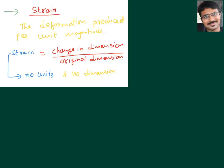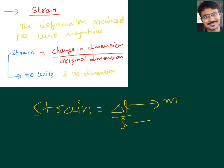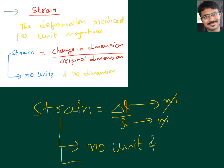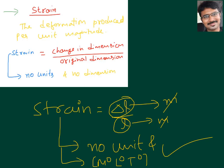What about its units? Coming to the units — strain is change in length by original length. Change in length is in meters, and L is also in meters, so we can cancel meter by meter. That means strain does not have any units. And obviously there are no dimensions either, since the same type of quantity is in numerator and denominator. So we can say no units and dimensions for strain.